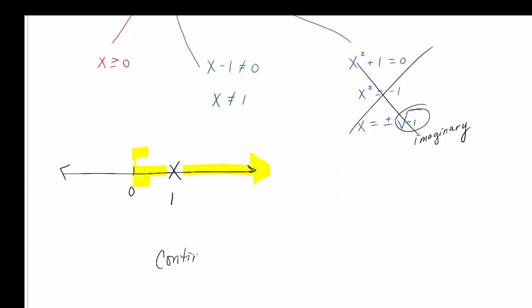There's our domain, also the interval that we're continuous on. We are continuous from zero to one and one to infinity.